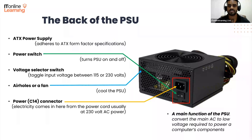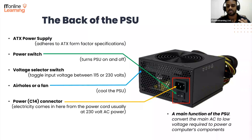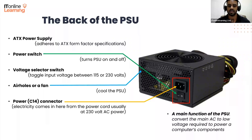These auto-switching power supplies specify a compatible voltage range, usually between 100 and 240 volts. Most power supplies also have air holes on the back which aid in cooling, while some models have a fan positioned there instead.